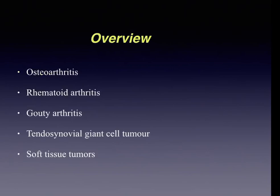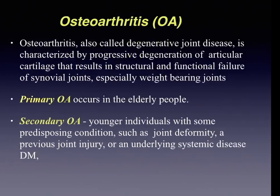The joint disorders include osteoarthritis, rheumatoid arthritis, gouty arthritis, and tenosynovial giant cell tumor. Osteoarthritis is a degenerative joint disease, one of the most common diseases of joints. It is characterized by progressive degeneration of articular cartilage that results in structural and functional failure of synovial joints, occurring especially in weight-bearing joints like the knee joint.